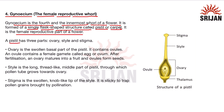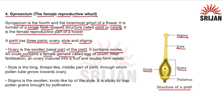A pistil or carpel has three parts: first is the ovary, second is the style, and third is the stigma. The ovary is the swollen basal part of the pistil and it contains ovules. Inside the ovules, the female gamete known as the egg or ovum is present for fertilization.